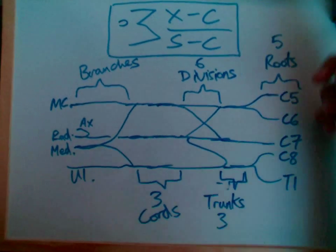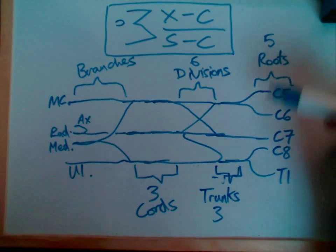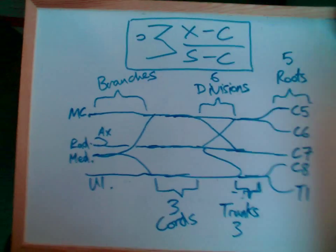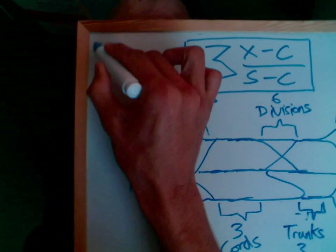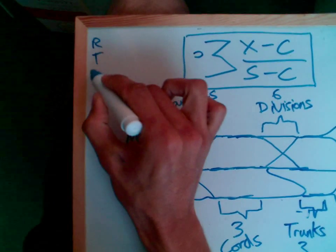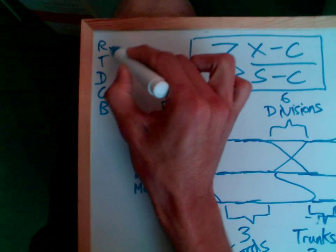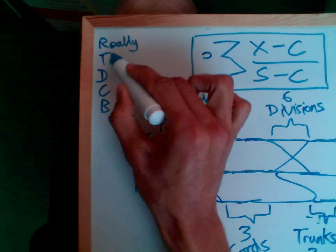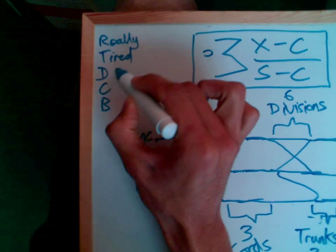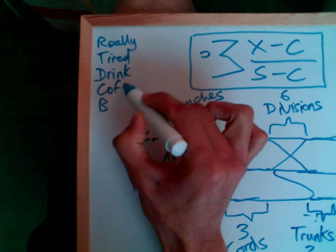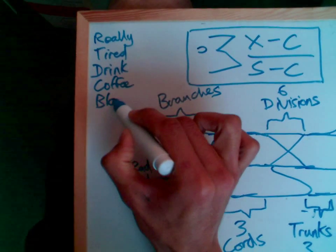I've also got a nice mnemonic for you to help you remember what order these come in. Roots, trunks, divisions, cords, and branches. The mnemonic is really tired, drink coffee black. Roots, trunks, divisions, cords, branches.